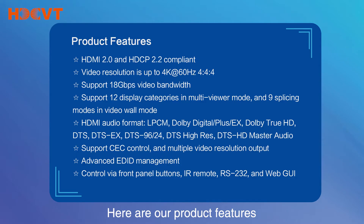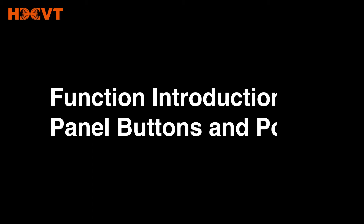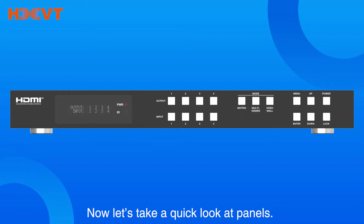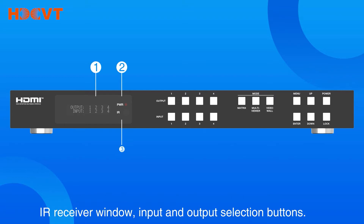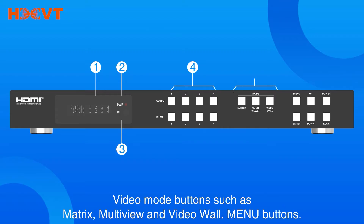Here are our product features. Now let's take a quick look at the panels. On the front panel, you will see a LCD screen, power indicator, IR receiver window, input and output selection buttons, and video mode buttons such as Matrix, Multi View, and Video Wall menu buttons.